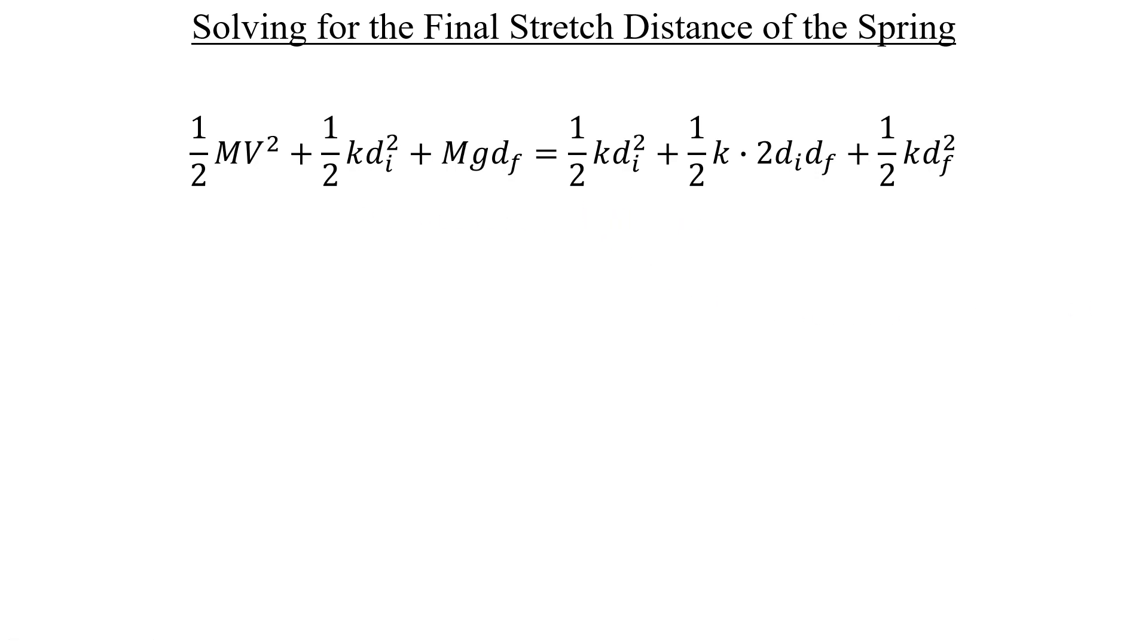Let's go ahead and subtract those out and keep going by multiplying both sides by 2 to get rid of these one halves. Remember, we want to solve for d sub f. And if you look closely, there's a quadratic of d sub f hidden in this equation at the bottom. Let's move everything over to the left hand side and write it in descending powers of that variable, like this.